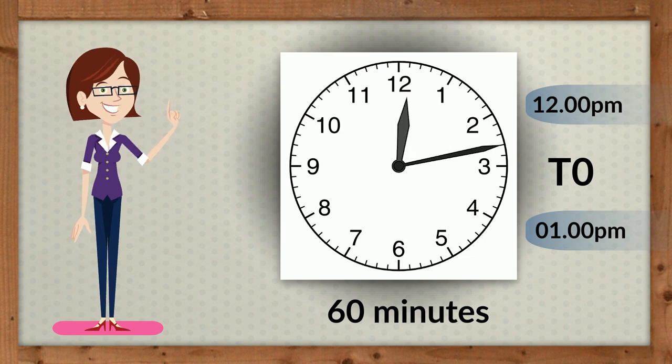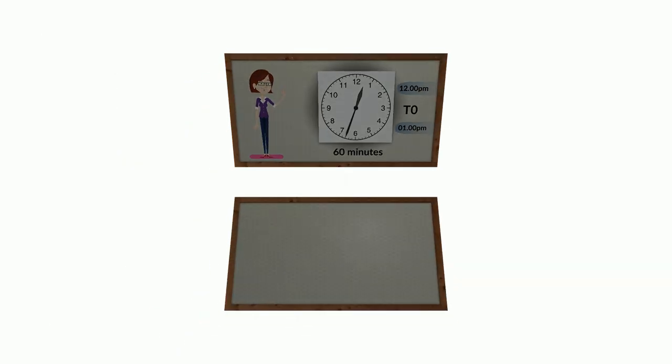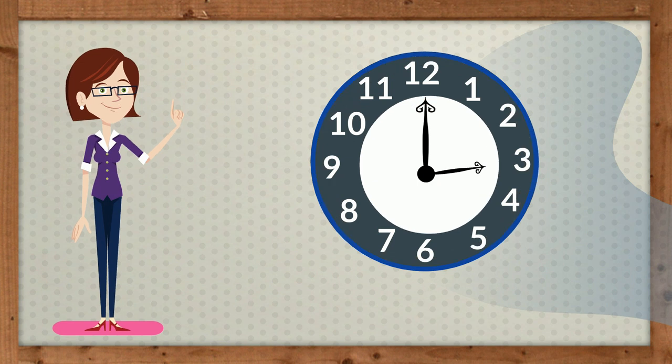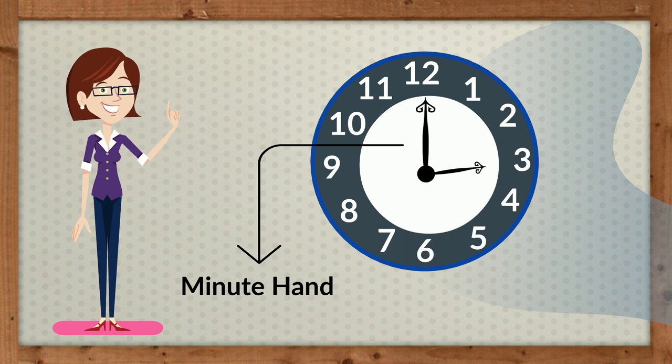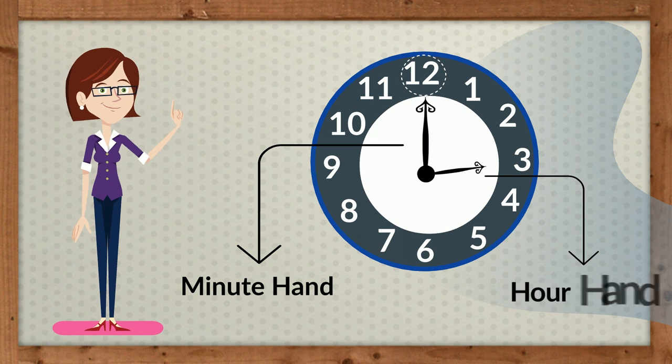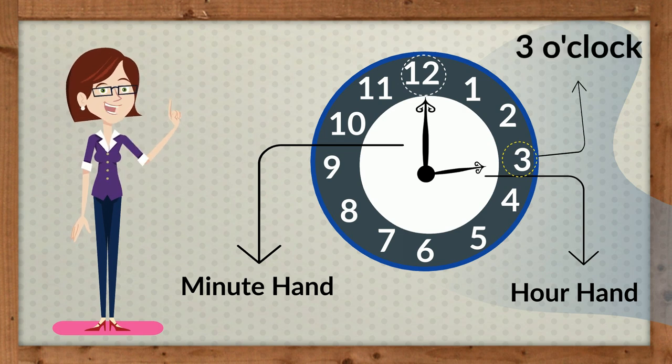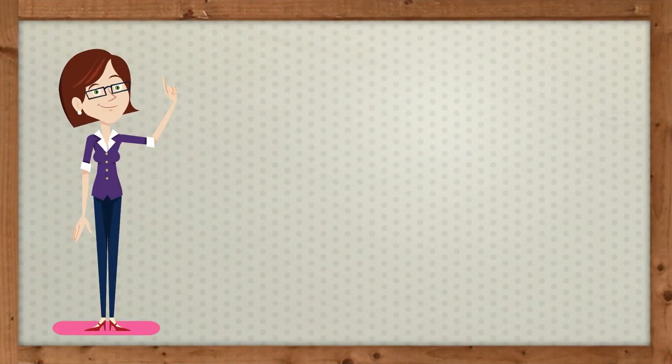For example, look at the clock. The minute hand is pointing towards 12 on the clock and hour hand is pointing towards 3. Therefore, we read the time as 3 o'clock.